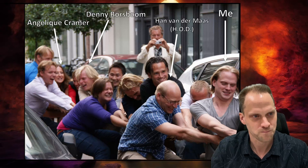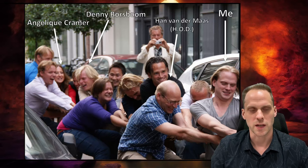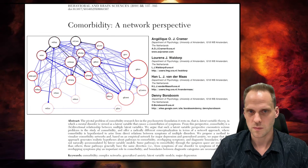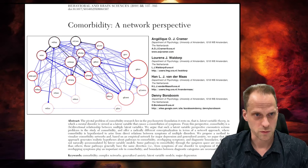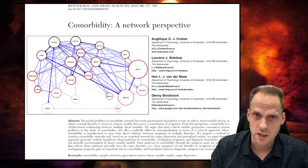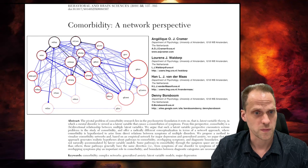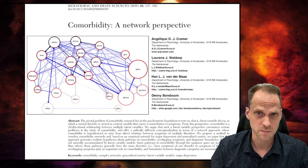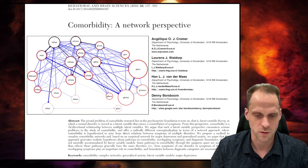Han van der Maas, Denny Borsbroom, Angélique Cramer, who I highlight here. Before I started doing a PhD, they wrote this paper on a network perspective to comorbidity. And this paper was published in 2010. So, it was written in 2008, 2009, somewhere around that time. And I think this is the first paper. It was really on the network perspective to clinical psychology and network perspective to psychopathology. And this has been a very, very influential paper because lots of following papers that you also learned about in this course followed up on this work.